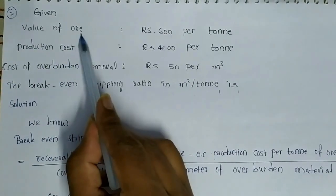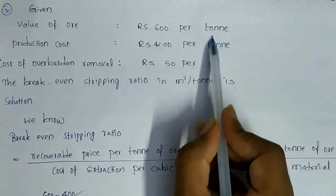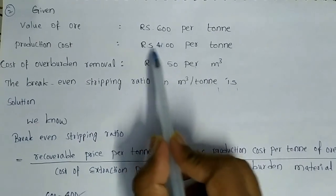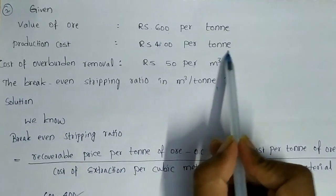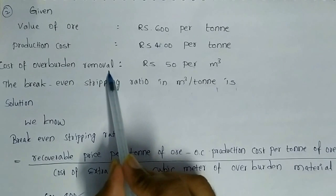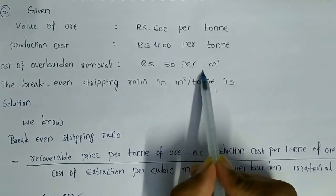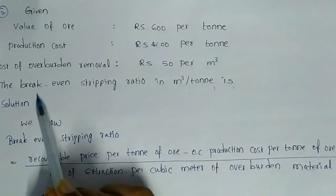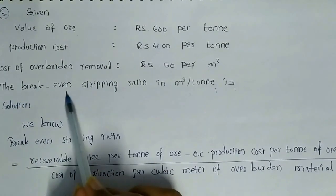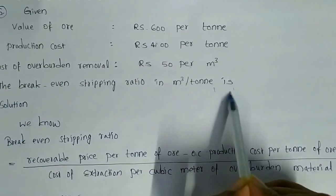For the second problem: the value of ore is Rs.600 per ton, the production cost is Rs.400 per ton, and the cost of overburden removal is Rs.50 per cubic meter. Find the breakeven stripping ratio in cubic meter per ton.